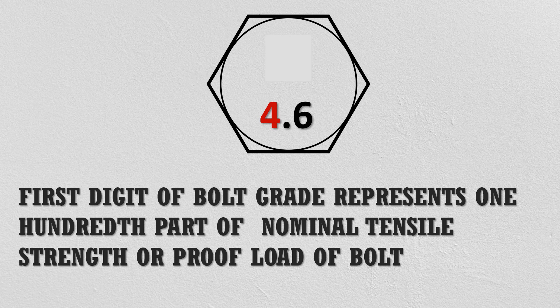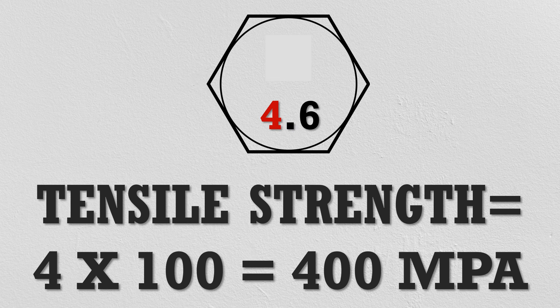The first digit of bolt grade represents the 100th part of the nominal tensile strength, or proof load stress, in megapascals. For example, a bolt with property class 4.6 has a nominal tensile strength equal to 400 megapascals, and it can be calculated by multiplying the first digit of bolt grade by 100.